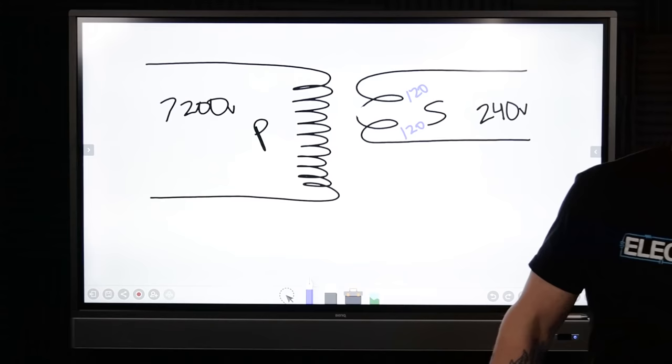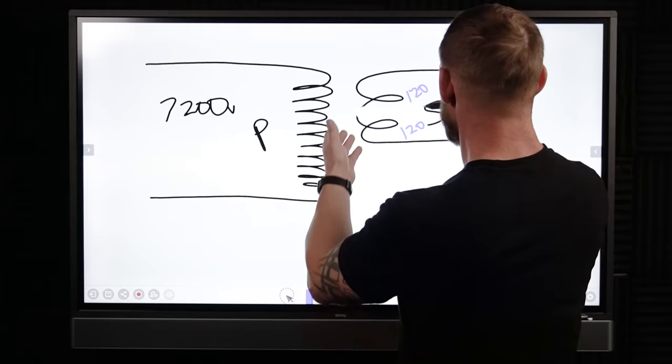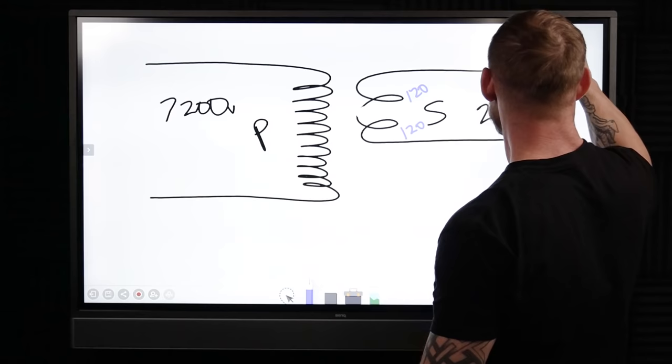Again, code says that the neutral conductor is a conductor connected to the neutral point of the system that is intended to carry current under normal conditions. So they are intending for this conductor to carry current. If we've got loads on this, say we've got like a light bulb that's connected...